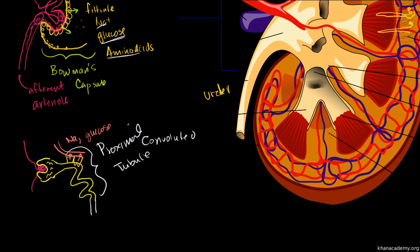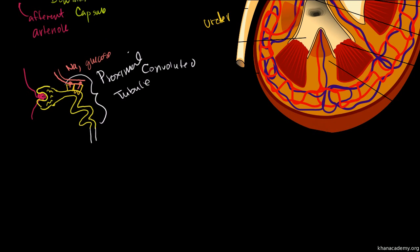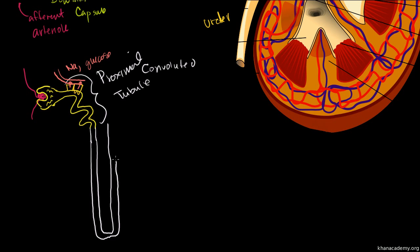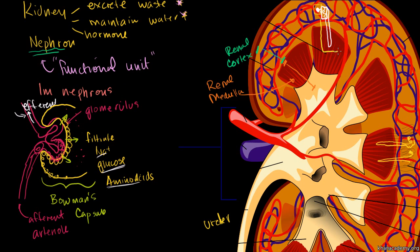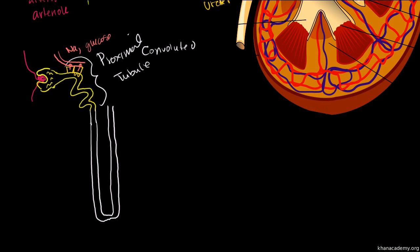Then we enter the loop of Henle — in my mind, the most interesting part of the nephron. It dips down and then comes back up. Most of the length of the nephron is the loop of Henle. It crosses the border between the cortex and the renal medulla, and it does that for a very good reason. The loop of Henle has two main goals.